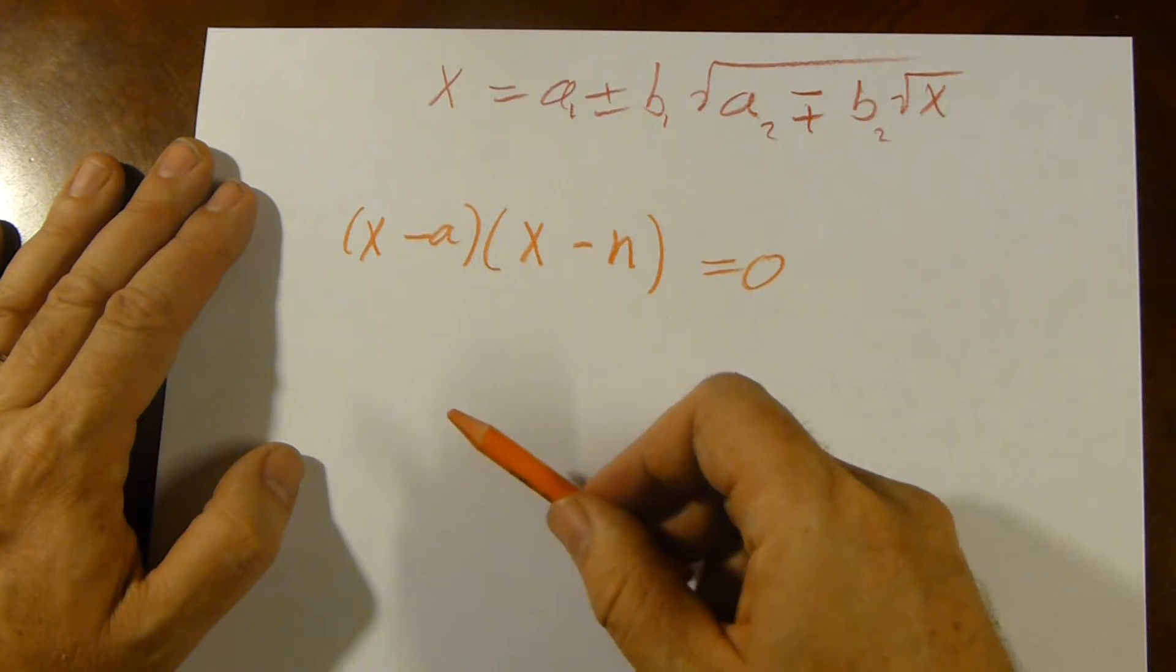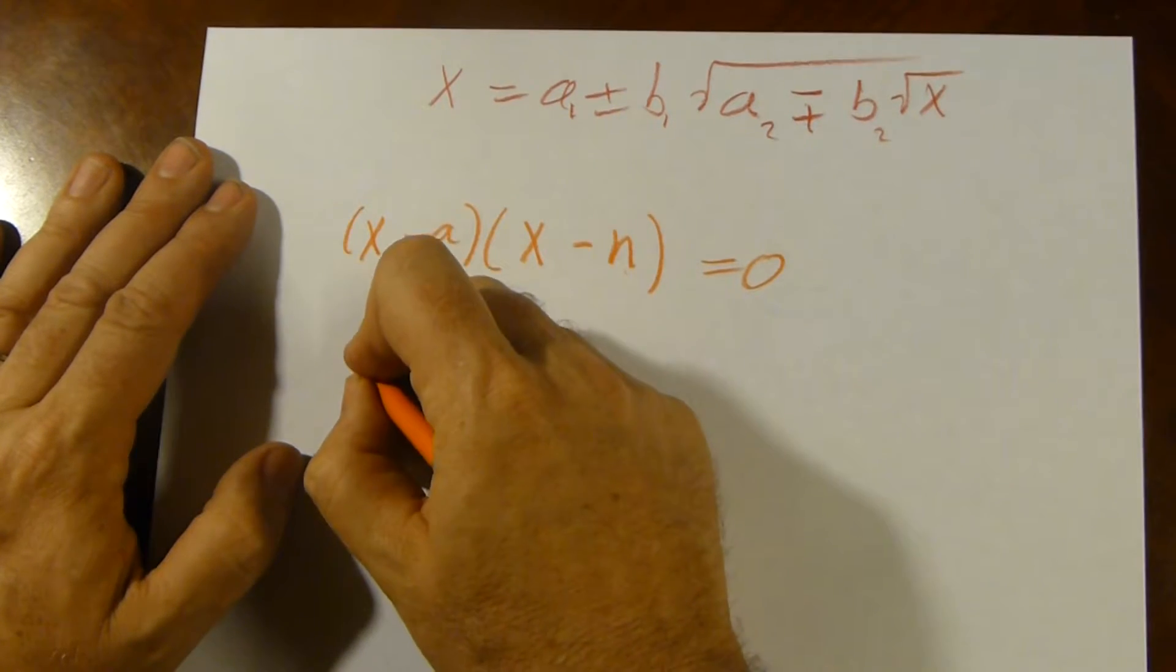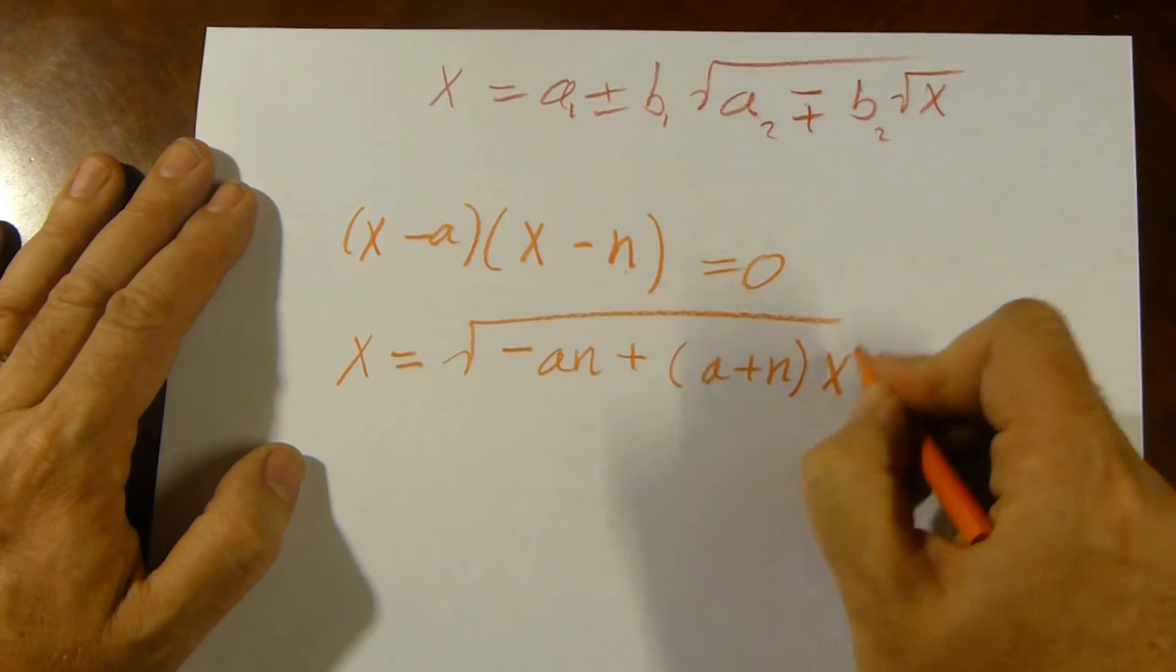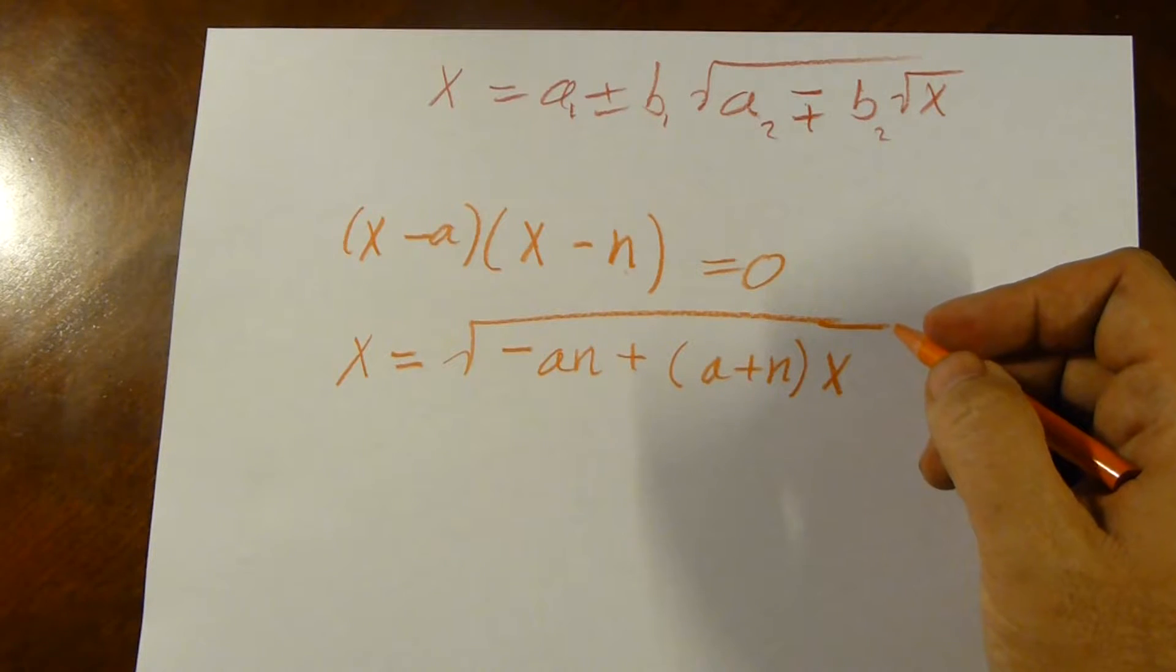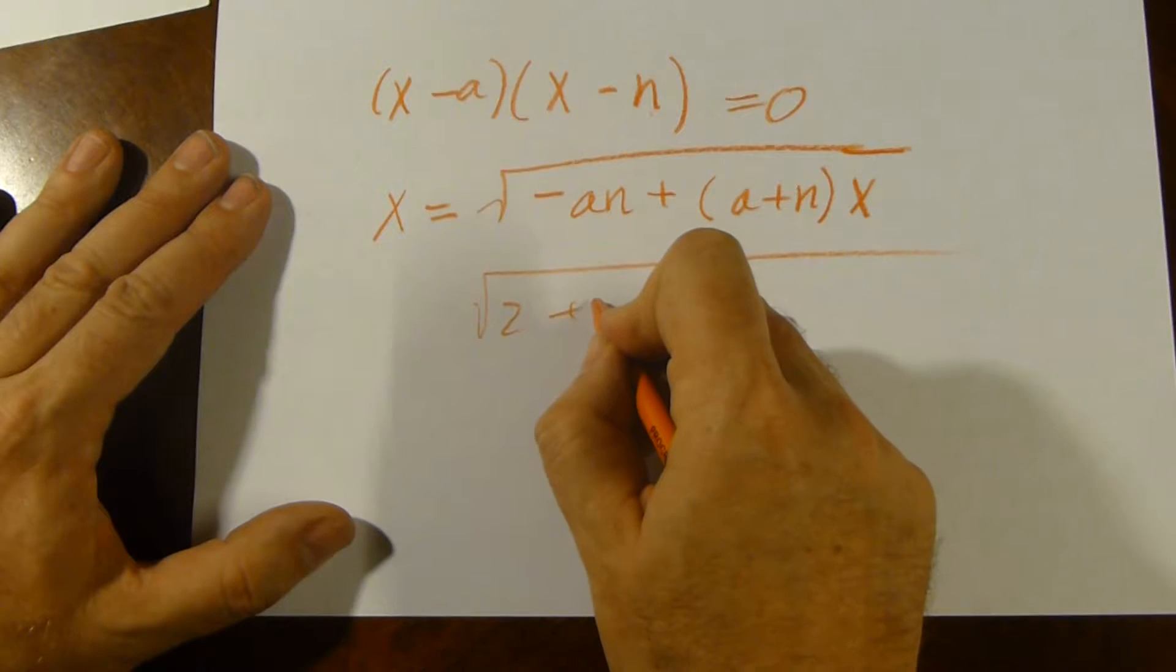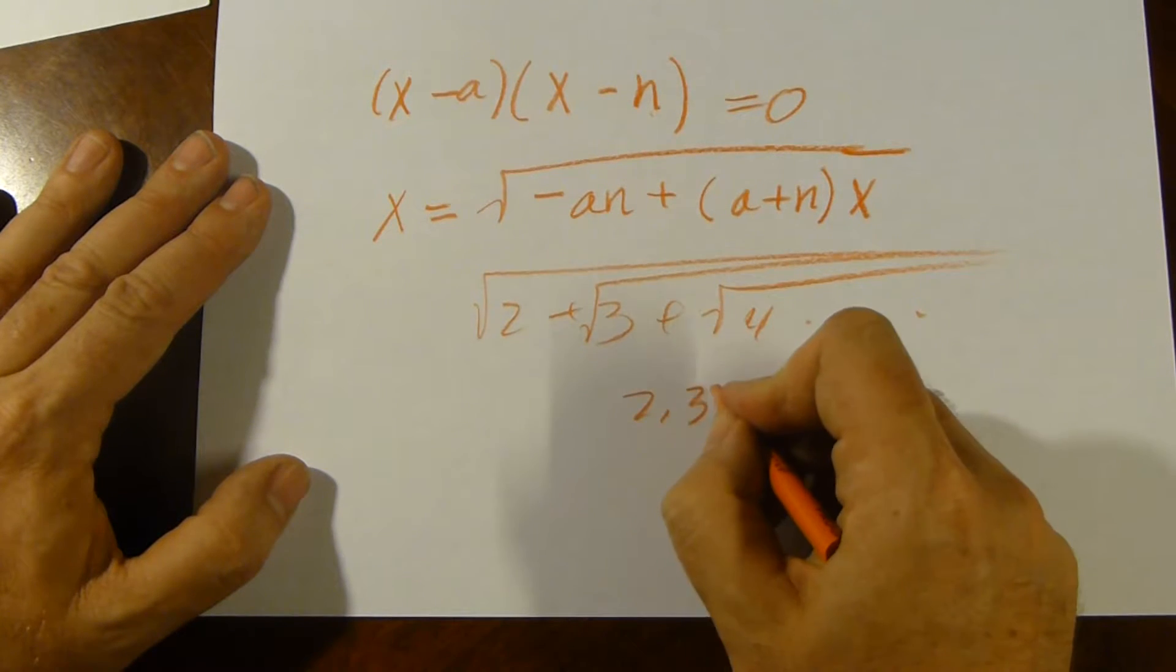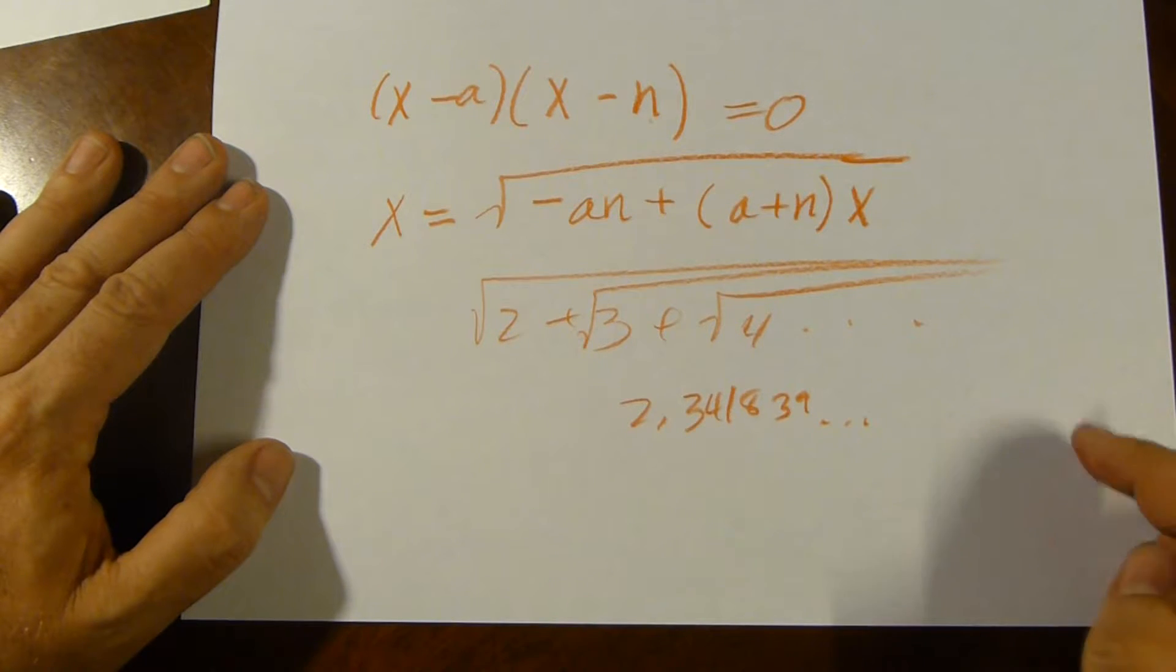Now, if you can use this to get some interesting value, I would love to hear about it. As it is, I find this simply an interesting one. So, I'm going to solve this, let n vary each time I do it, so that I get x equals square root negative a n plus a plus n x. Now, if I do that and just let n vary, well, I wasn't able to find a closed form solution for it. I evaluated the form 2 plus root 3 plus root 4, so on. It got a value of about 2.341839. Okay, I see no clear value for it, but I find that interesting.